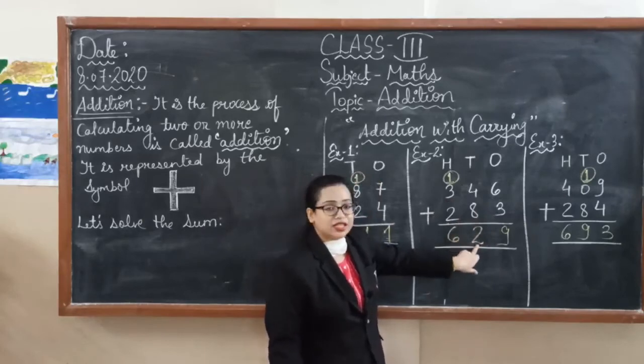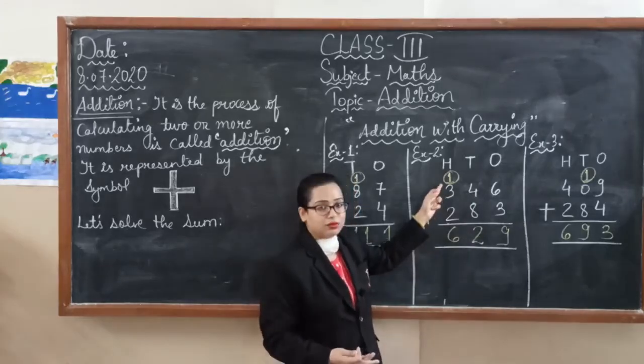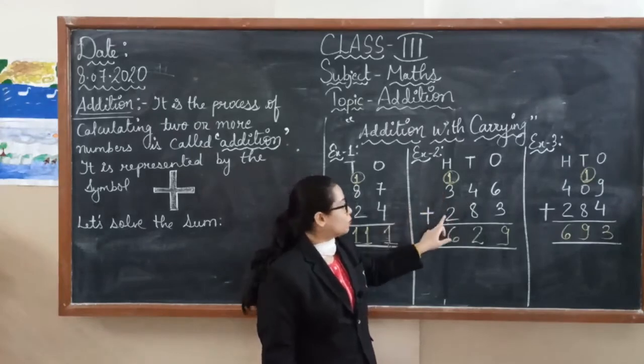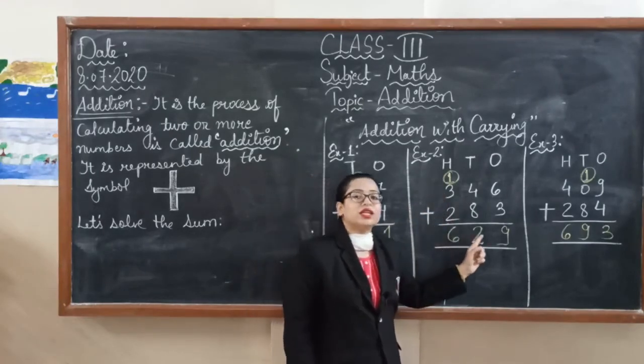Two we will write below, and one we will write into the next column. It is our carry one. Start counting. One plus three is four. Four plus two is six. So our final answer is six hundred and twenty-nine.